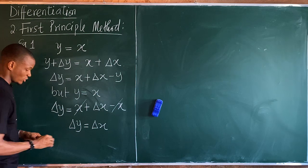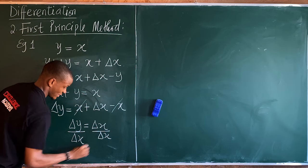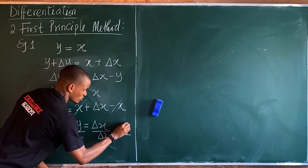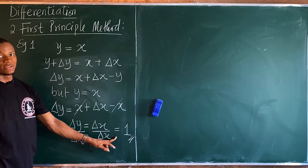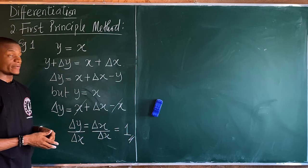The x and minus x cancel, leaving Δy equals Δx. Dividing both sides by Δx gives Δy/Δx equals 1. This matches the general method result of 1, confirming the first principle concept.